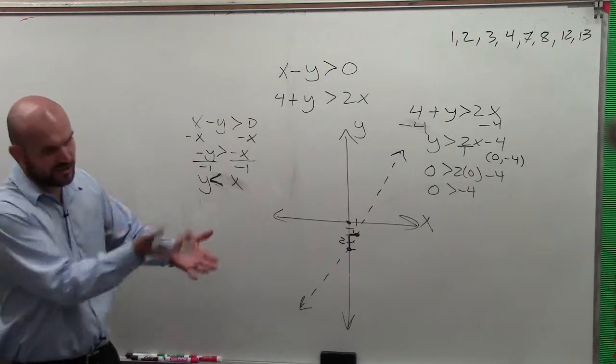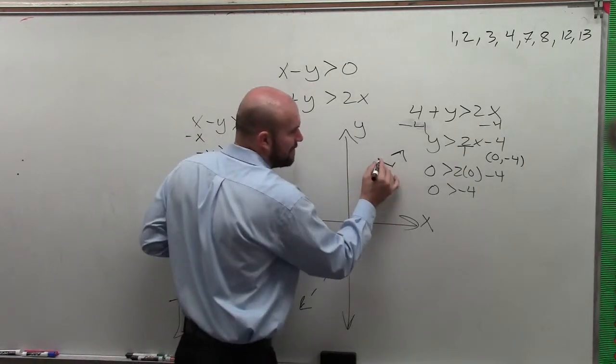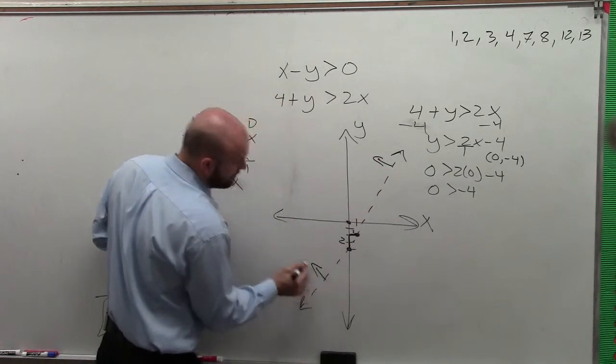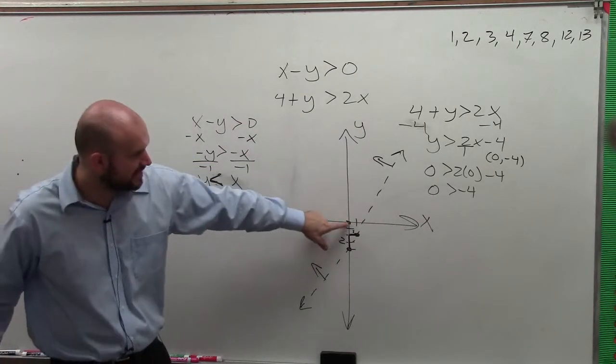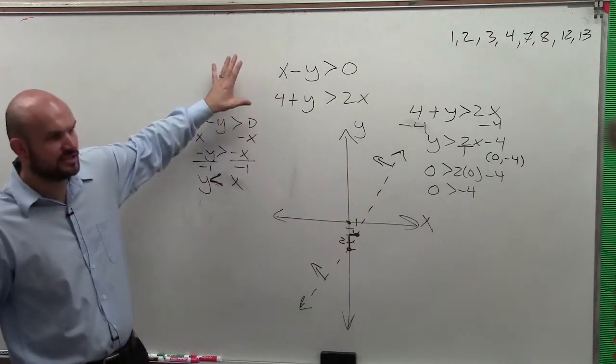Now, in regular inequalities, we just shaded it, right? Since we're doing two of them, I'm not going to shade it until I'm done with both of them. I'm just going to use arrows. But I know to shade above the line. Since that is true, I shade towards the test point, right?